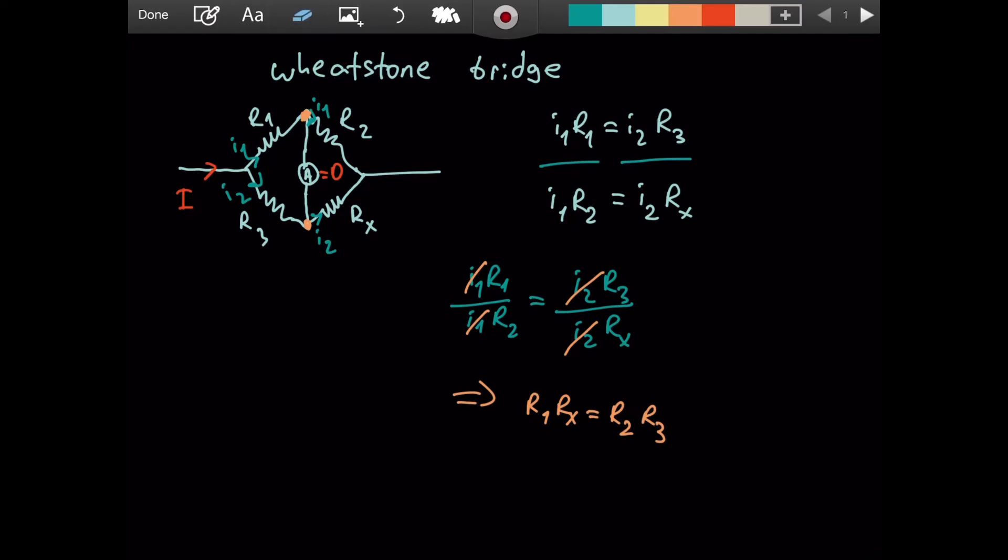And remember, we are trying to solve for Rx. So Rx is going to be R2 R3 over R1. And that's the final result for our Wheatstone Bridge formula.